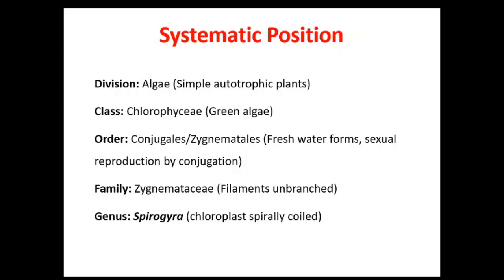Regarding the systematic position and classification of Spirogyra: it is classified in the division Algae due to its simple habit, then into class Chlorophyceae (green algae) because its filaments are green in color, then into the order Conjugales (Zygnematales) because the alga reproduces by conjugation, then into the family Zygnemataceae because its filaments are unbranched, and finally into the genus Spirogyra, named after its characteristic spirally coiled chloroplasts.